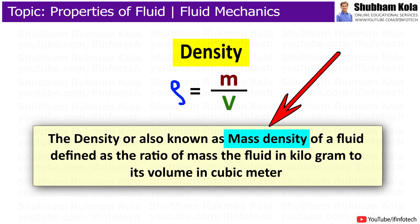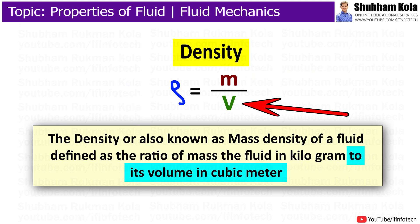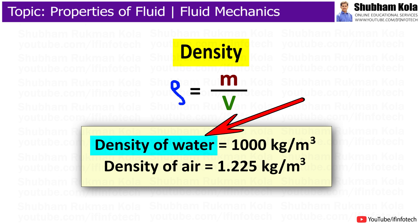The density, also known as mass density of a fluid, is defined as the ratio of mass of the fluid in kilograms to its volume in cubic meters. The density of water is 1000 kg per meter cube and the density of air is 1.225 kg per meter cube.